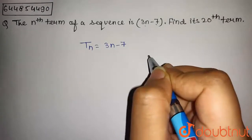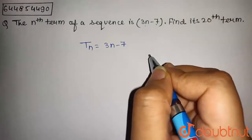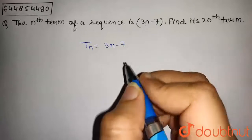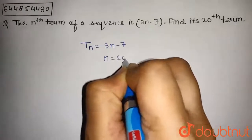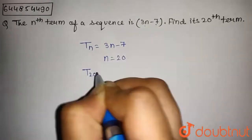Now we have to find the 20th term. To find the 20th term, we will put n equal to 20. So on putting n equal to 20, we get T20, that is the 20th term.